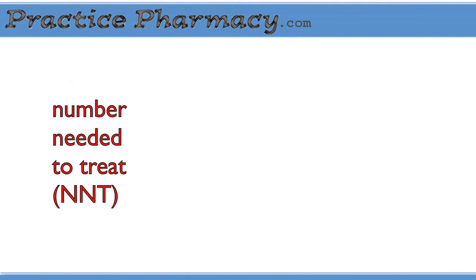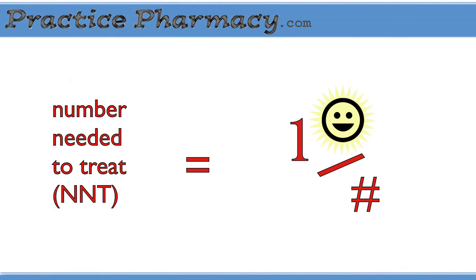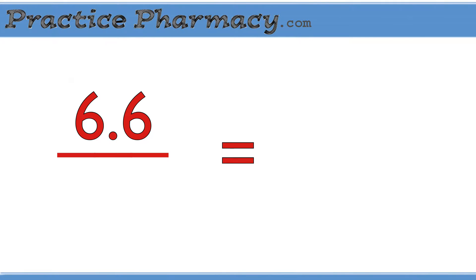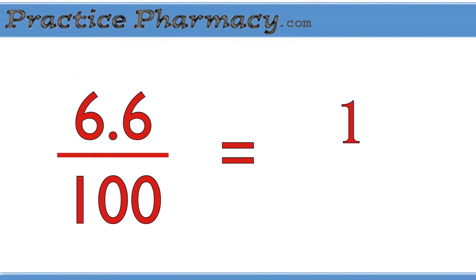The number needed to treat is the size of the group in which one person experiences a benefit. These ratios are proportionate to each other. So 6.6 people out of a group of 100 experience a benefit, and one person out of an unknown size group experiences benefit. What's the size of the group in which only one person benefits?